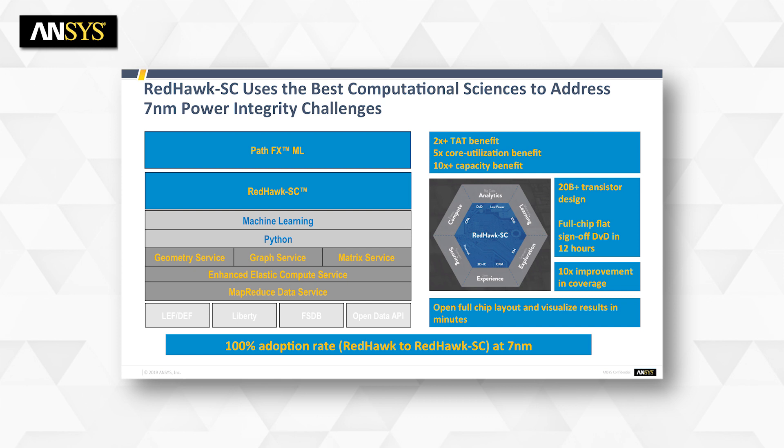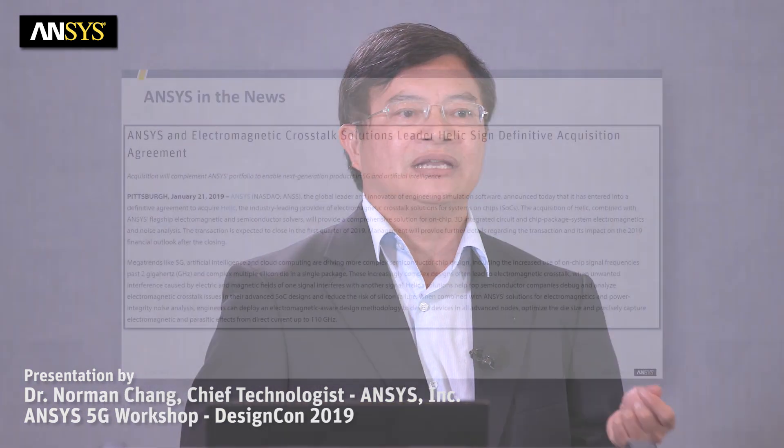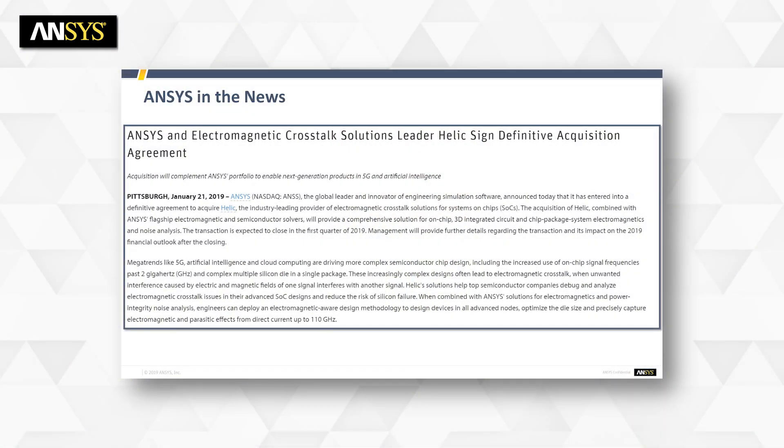We acquired Helic and will integrate their solution to address 5G problems. Their focus is on spiral inductor synthesis with excellent correlation with HFSS. They also solve electromagnetic crosstalk between signal lines and power lines, signal-to-signal interference, and provide a fast electromagnetic scan of your design to quickly detect weak spots for electromagnetic crosstalk.